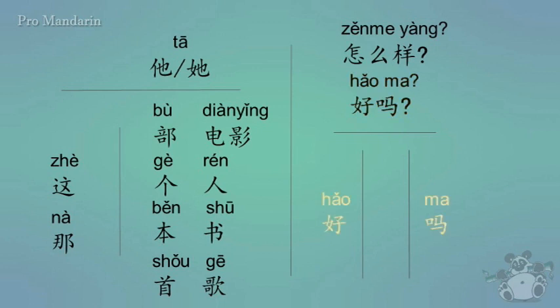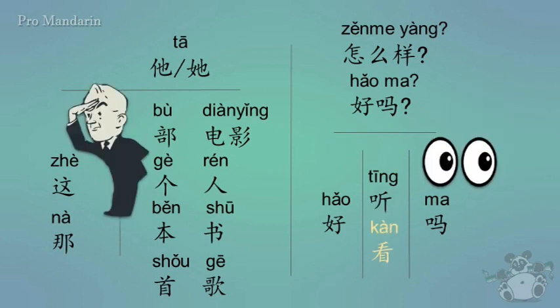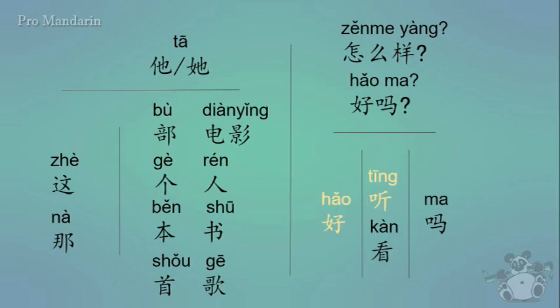The first word is tīng, which means to listen to. And then the next one is kàn, which means to see, to look, to watch. Hǎo tīng means it sounds good. Hǎo kàn means it was good to watch, it was a good read, or it looks good. Then you put ma at the end and it turns it into a question.